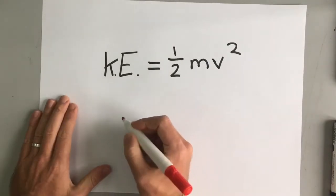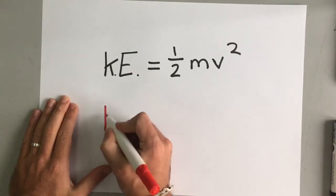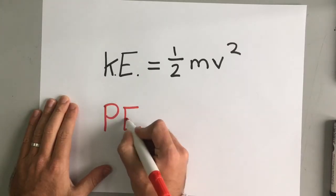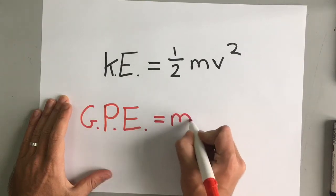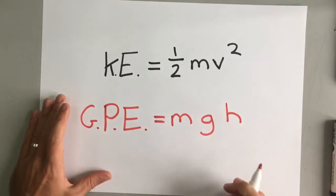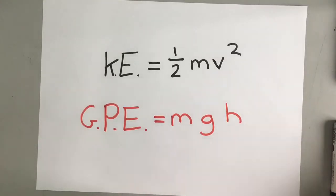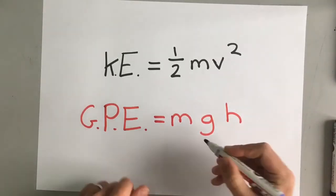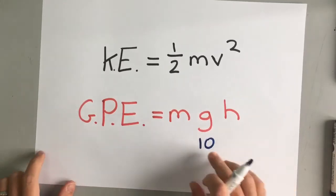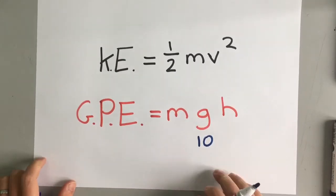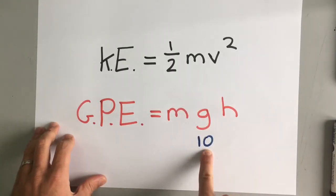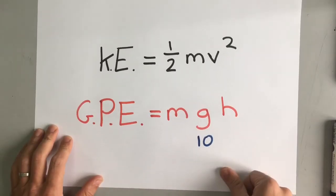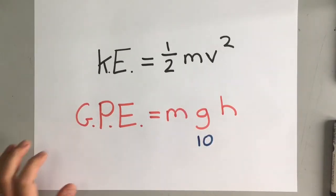If we have kinetic energy, the equation for gravitational potential energy is mass times gravity times height. Now, at GCSE, we always use the number 10 for gravity. It's actually very slightly smaller than 10. It's about 9.8. But we use 10 usually at GCSE. And the other way of saying that is acceleration of freefall. And that's 10 on Earth.